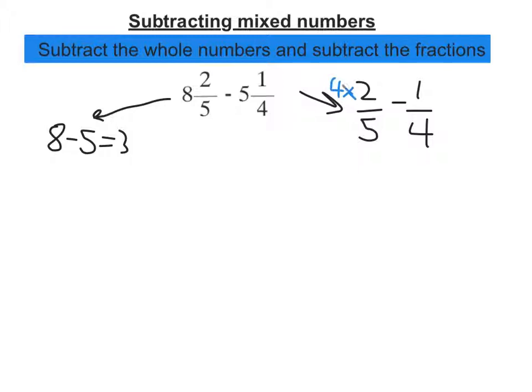So I'm going to times this fraction top and bottom by 4, so I can get 20 as the denominator, because 4 times 5 is 20. And this one I'm going to have to do by 5, because 4 times 5 is 20.